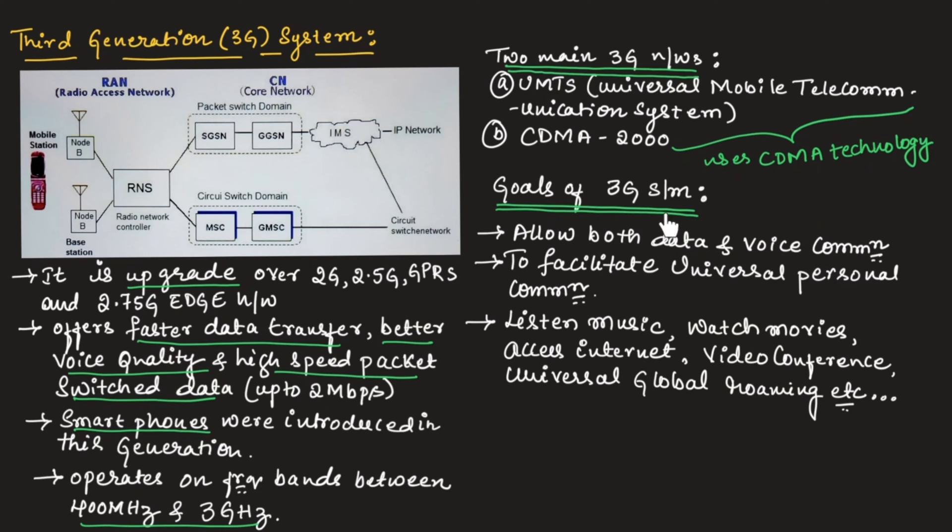The main goal of 3G systems is to allow both data and voice communication. As you can see in this diagram, this block diagram represents third generation system. It allows both data communication as well as voice communication. Here packet switch domain is for data communication and circuit switch domain is for voice communication. RNS represents radio network controller. MSC is mobile switching center.